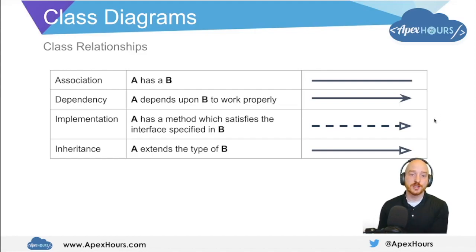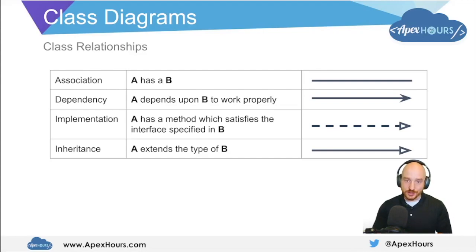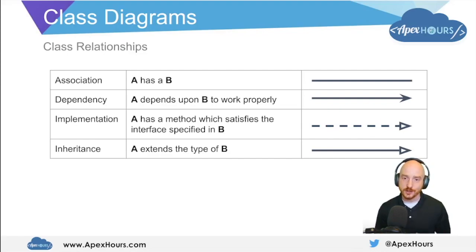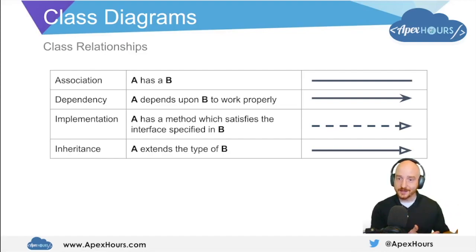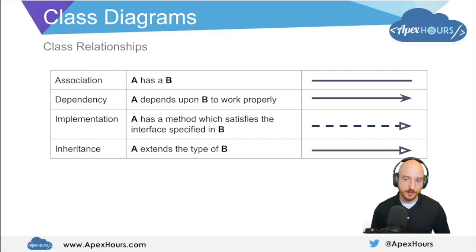The next type of relation is called implementation, meaning A has a method which satisfies the interface specified in class B. We'll learn more about interfaces and their implementations shortly. The final relationship is inheritance, where class A extends class B — it inherits all of the methods and properties defined on class B, with no need to rewrite or redefine any of that code.